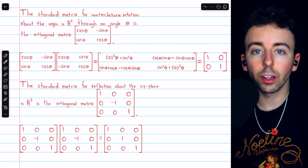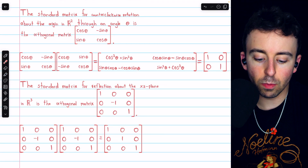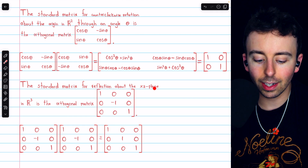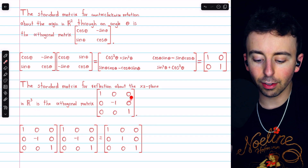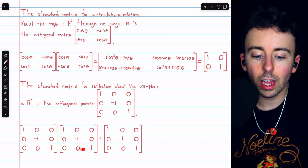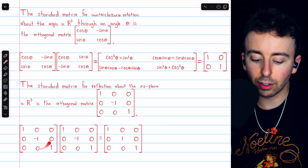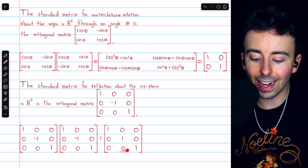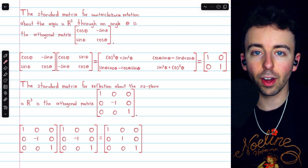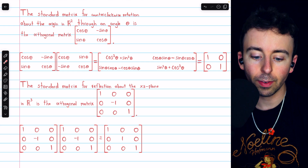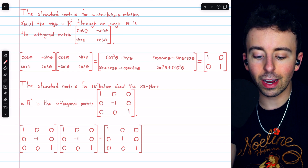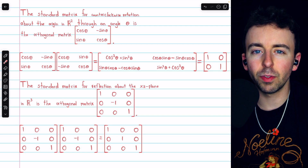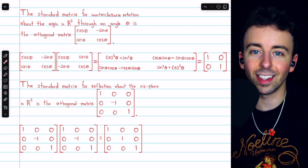Another transformation with an orthogonal standard matrix is the reflection operation. The standard matrix for reflection about the XZ plane in R³ is orthogonal, because if we multiply it by its transpose — which happens to be itself since it's a symmetric matrix — we get the identity. It's no coincidence that this rotation matrix and this reflection matrix are orthogonal; we'll see a theorem near the end of this video where it's clear why this is the case.